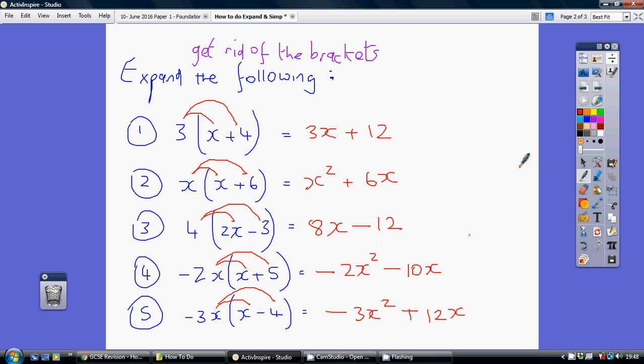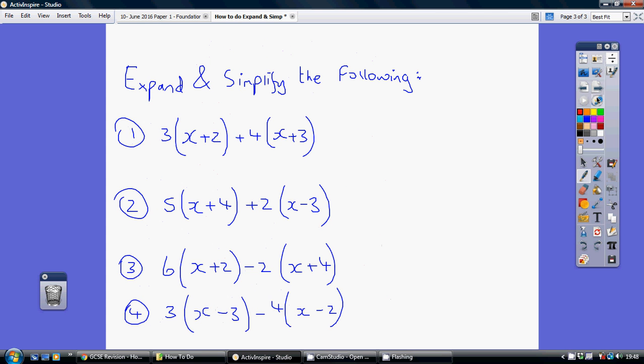Now, these questions here are more complicated. We've got an expression here and an expression here. So we've got 2 lots of claws. Step 1, expanding. Well, it's just going to be the claw and the claw. 3 times x is 3x. 3 times 2 is 6. 4 times x is 4x. 4 times 3 is 12. So that's step 1. We've expanded.